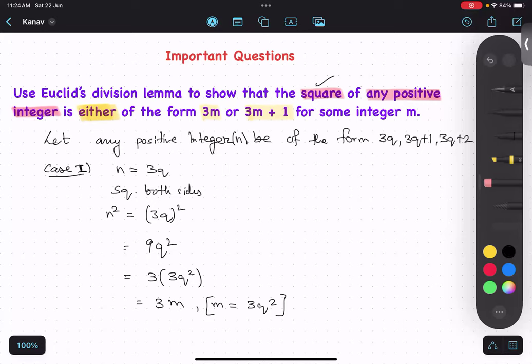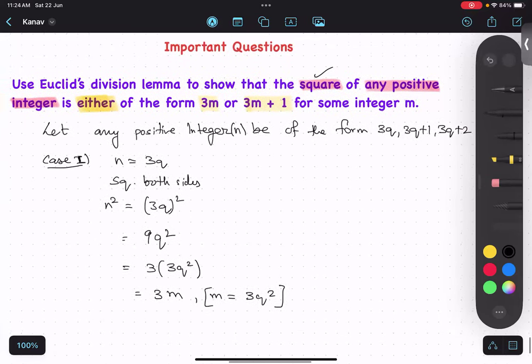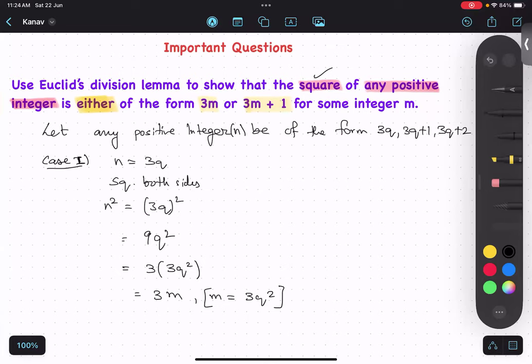So converted, first case converted into 3M. Clear? Yes. Case number 2, where N equals to 3Q plus 1, 3Q plus 1.